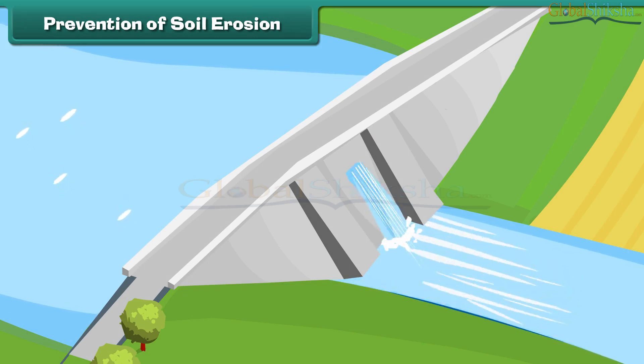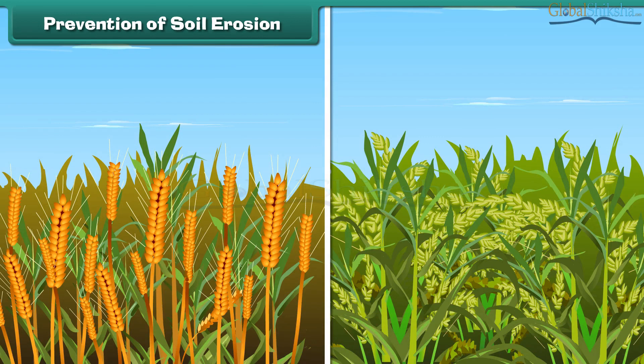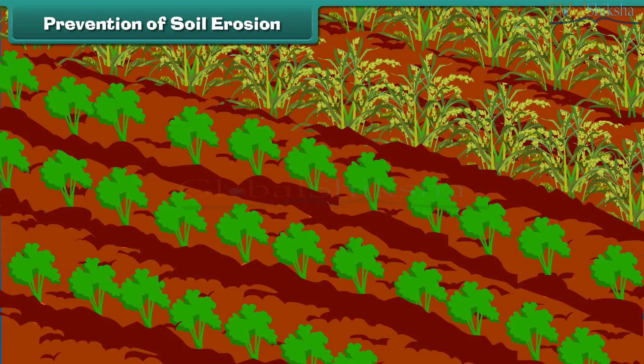Some modern techniques of farming need to be practiced. For example, different types of crops should be grown at different times on the same land. Different types of crops should also be grown in alternate rows on the same land. These practices control the loss of soil and increase the fertility of soil.